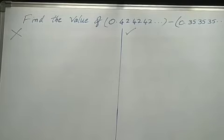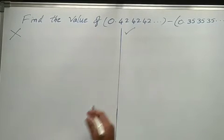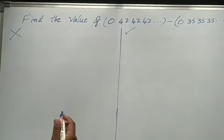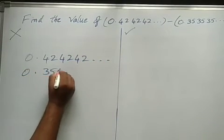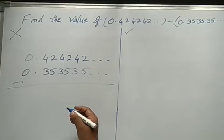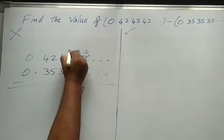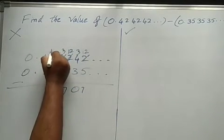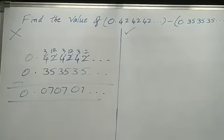Find the value of 0.424242... minus 0.353535... Both are recurring decimals. By seeing this problem, some people may think they can do direct subtraction — which is a wrong method. They might compute 42 − 35 = 7, 3 − 3 = 0, etc., getting 0.070707... continuing. But this method is wrong.